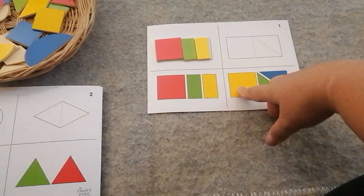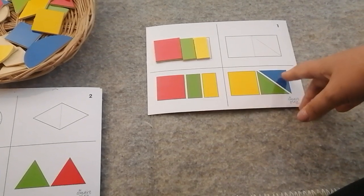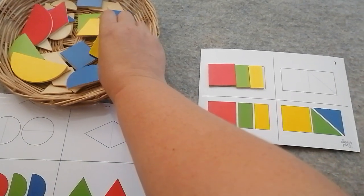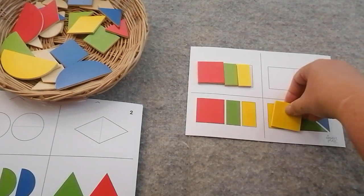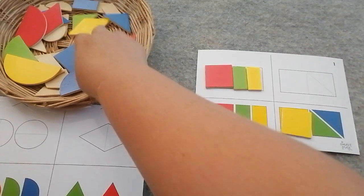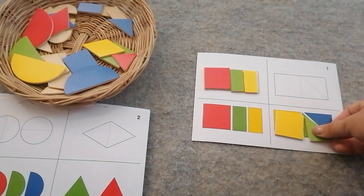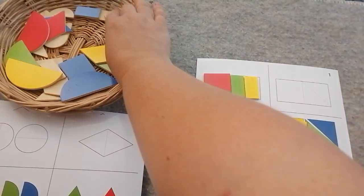Then we need a yellow square, the green triangle, and a blue triangle. Let's look here. There's a yellow square, there's a green triangle, and there's a blue triangle.